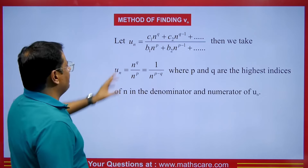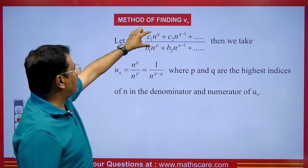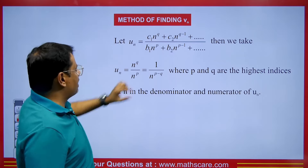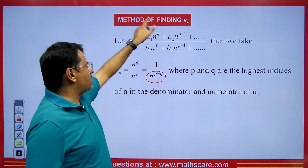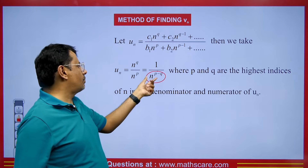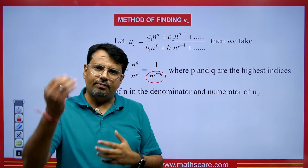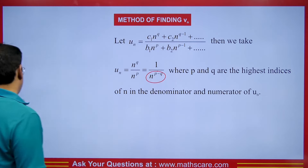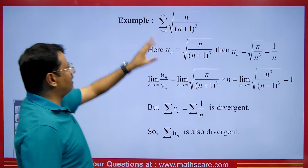So we can see: we have un, we pick the highest degree — in this case n to the power q and n to the power p — and take that as vn. Whenever terms of n cancel, pick the highest degree and consider it as vn. When you take this, you will notice how terms cancel and we get the finite value.